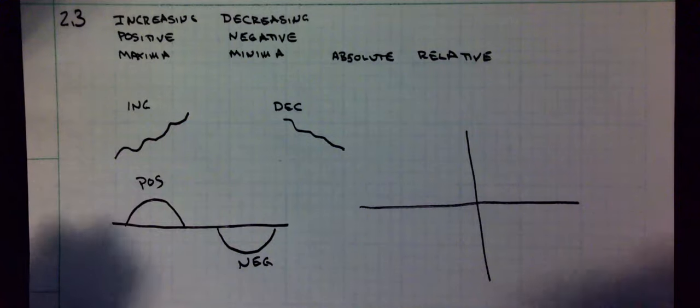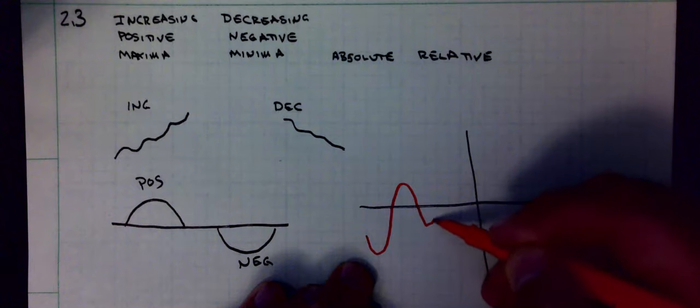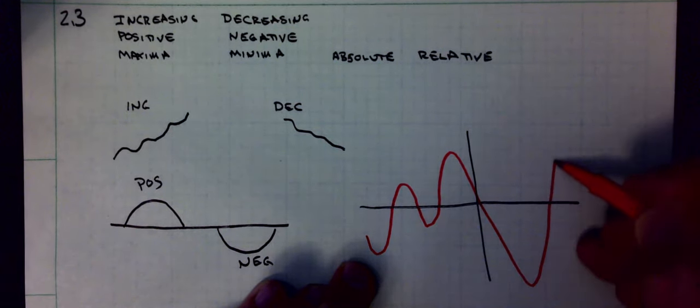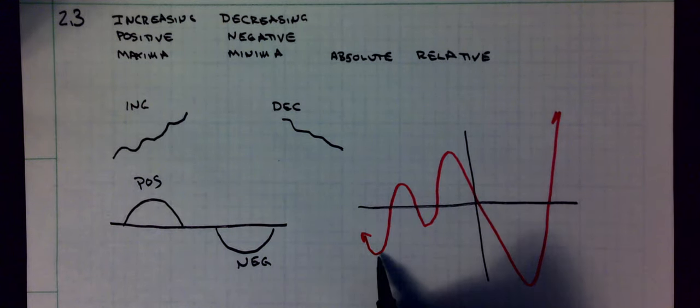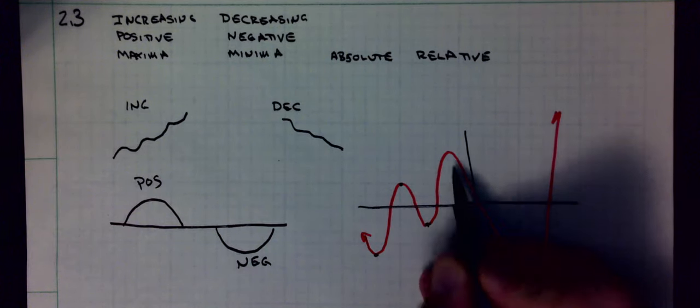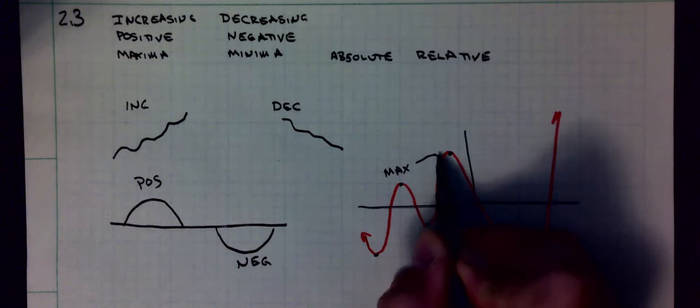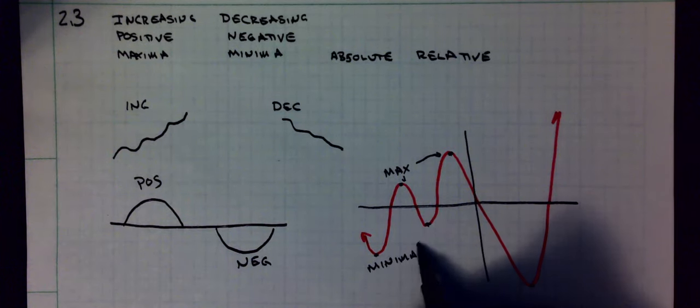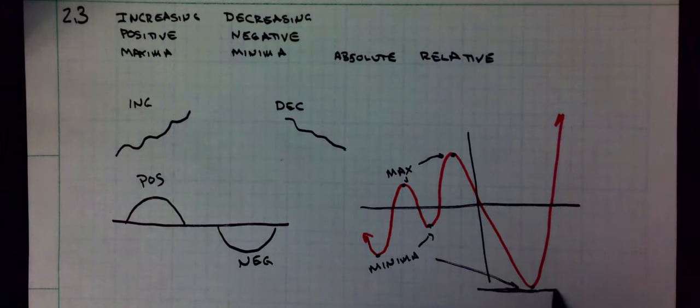Let me just draw a wonky old graph here and talk about something. So every time I have a mountaintop or a valley at the bottom, these are what we call extrema. Ones on the top are called maxima. Ones on the bottom are called minima. This one on the far right here, because it's the lowest that the graph ever goes, is called an absolute.